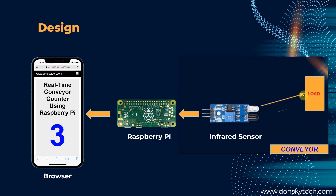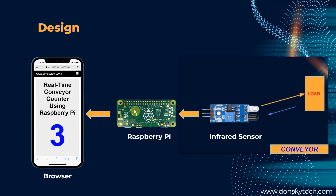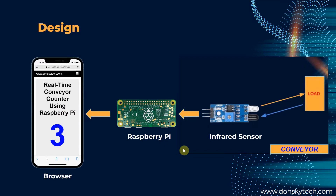For example, when the IR sensor detects that a load is passing through, then it signals the Raspberry Pi device. The Raspberry Pi device then increments its own counter and sends a WebSocket message to all connected clients. When we access the web application on our mobile phone, it opens a WebSocket client connection to our Flask WebSocket server. It will then listen for any incoming message that our web socket uses to update its own counter. That's how the design process of our project works.